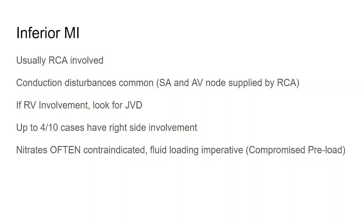Just for reference, an 18-gauge IV is not a large-bore IV. We're talking about 14s and 16s if the vasculature will allow for it. Why? Because you can give a liter of fluid in just over three minutes with a 14-gauge IV. So if you have a patient with compromised preload and you administer nitrates, which will hurt that preload, you can compensate for that while the arterial walls open up and allow that part of the heart to reperfuse — even on a micro level — to keep it alive until the patient is with the interventional cardiologist actually getting PCI.